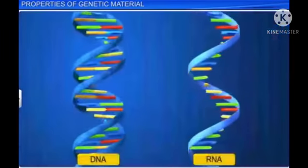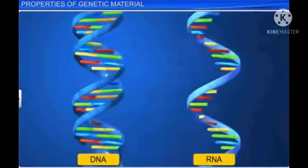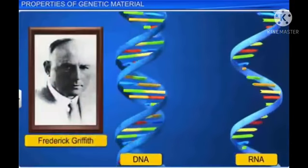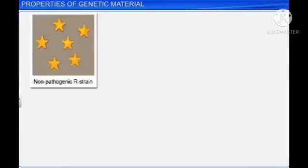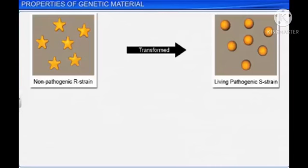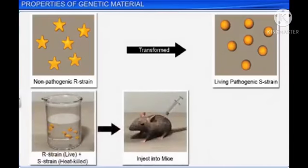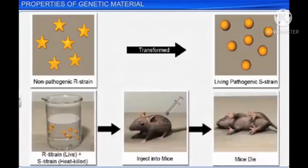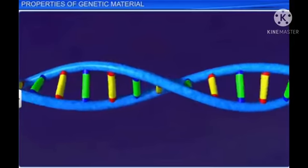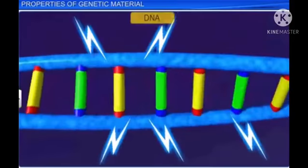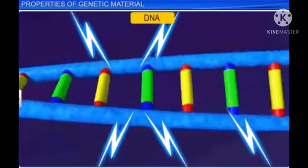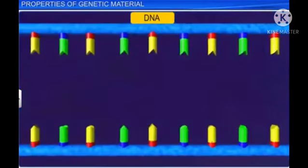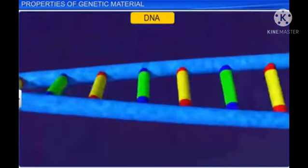Of the two nucleic acids, it was DNA that played a part in Frederick Griffith's experiment, where R-strain bacteria had been transformed to living S-strain. However, though the transformation killed the mice, it had not changed the properties of the DNA. This can be explained by the stable structure of DNA, which, although being separated due to exposure to heat, can come together under suitable conditions even after.